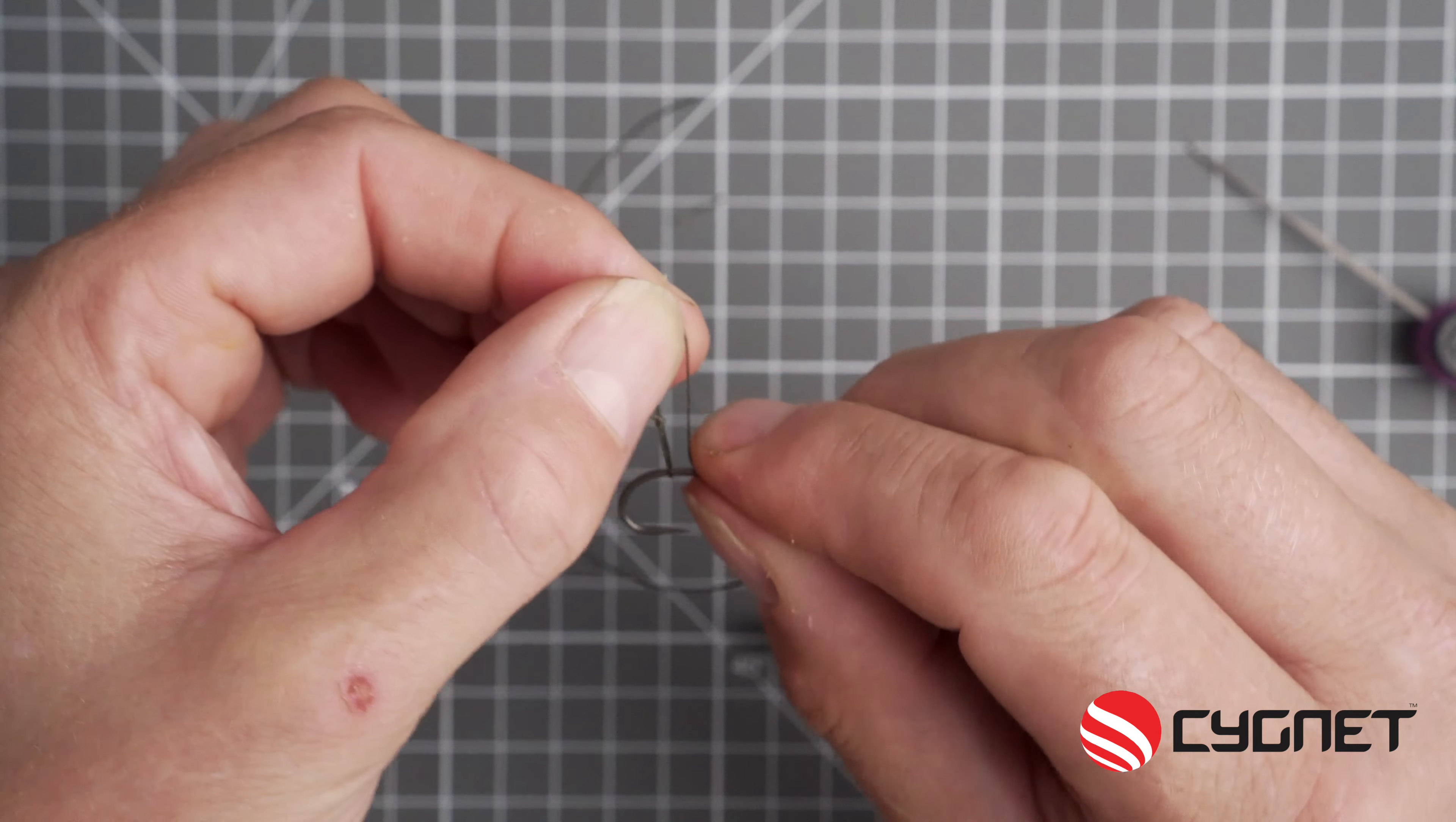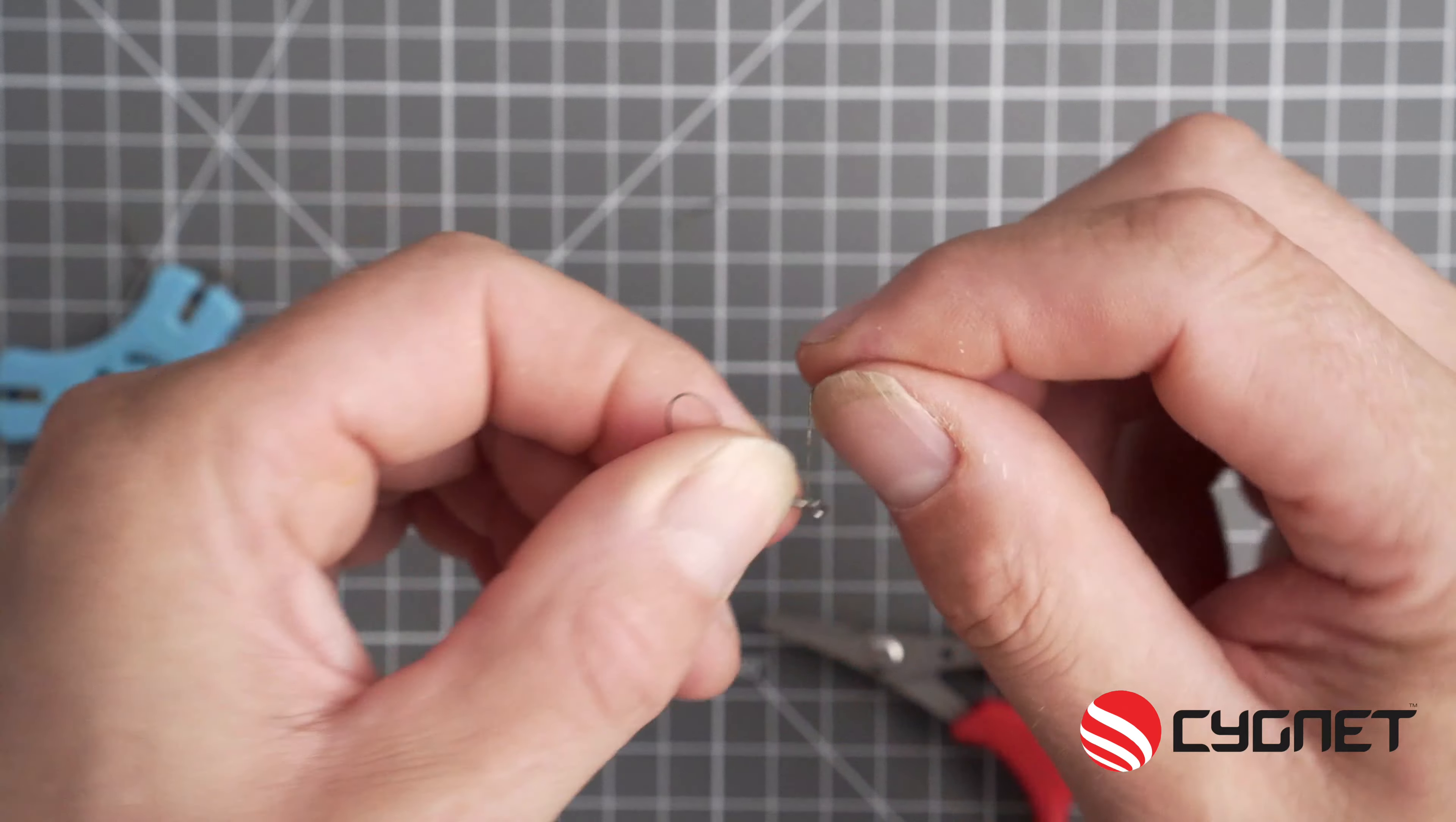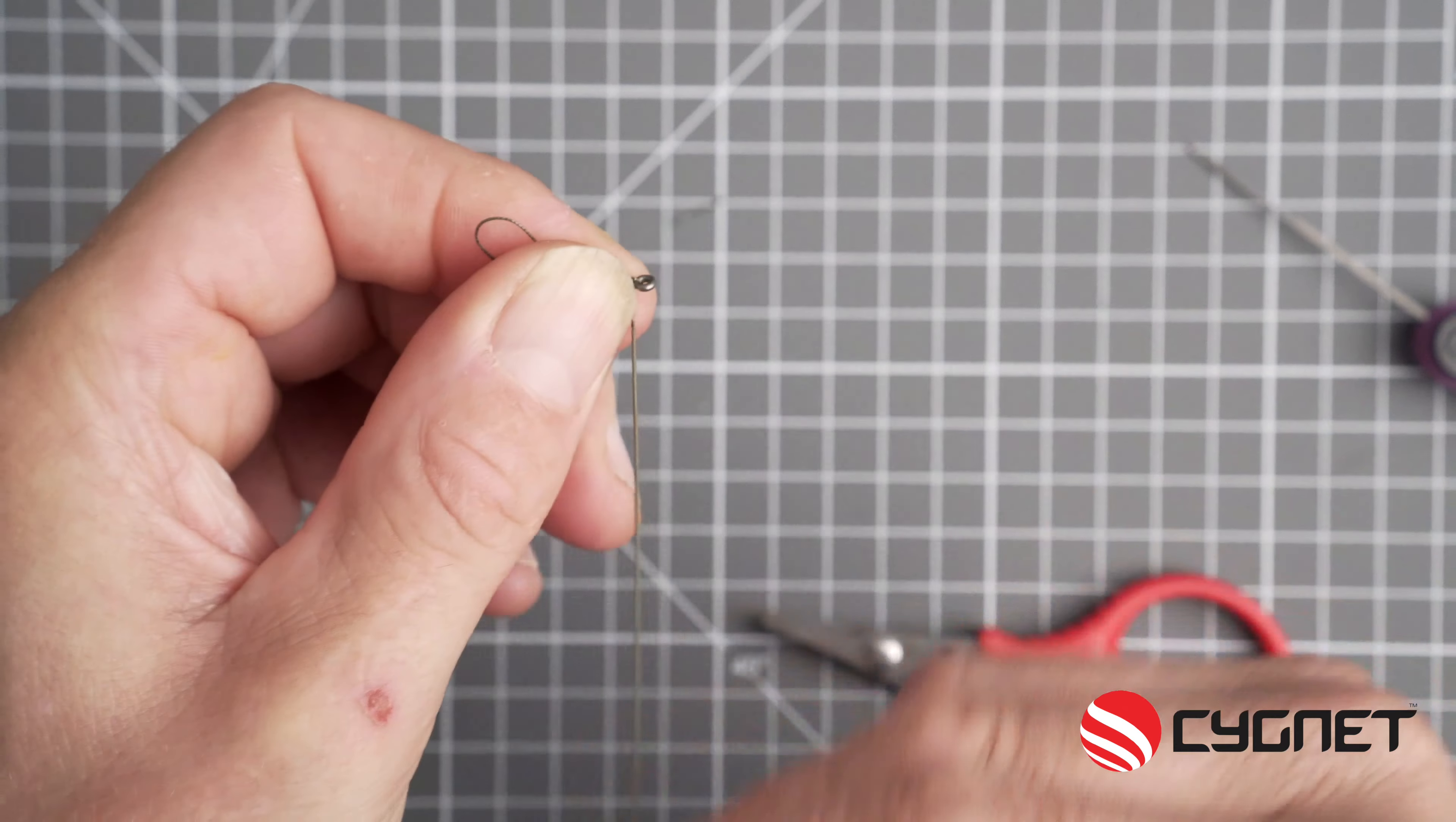Now the D can be anything between three-quarters of an inch to an inch long. So now with the rest of your hook link, I whip a four-turn knotless knot and then the tag end goes through the top again and out of the bottom.